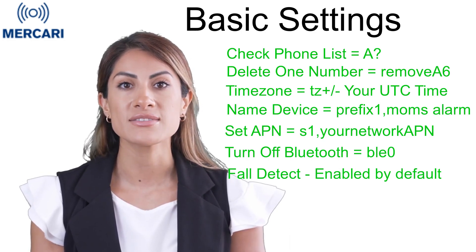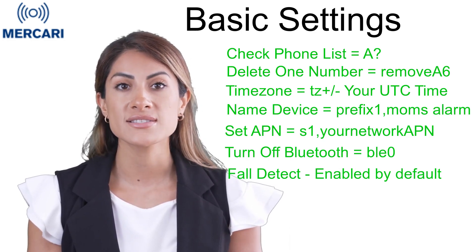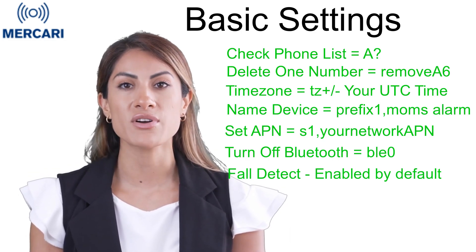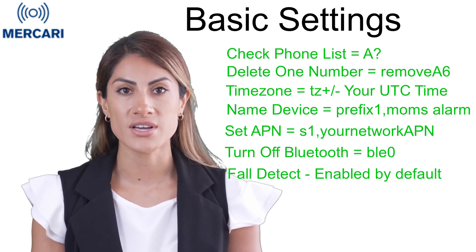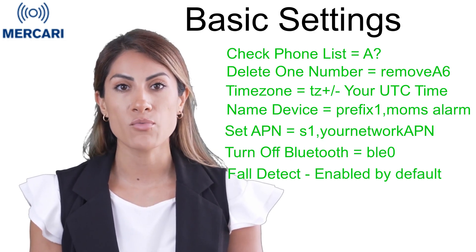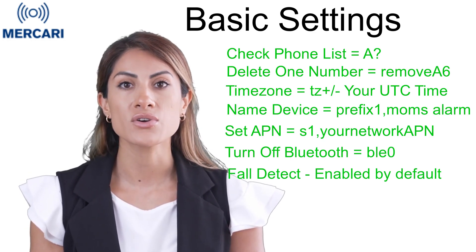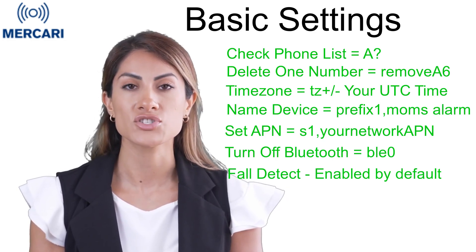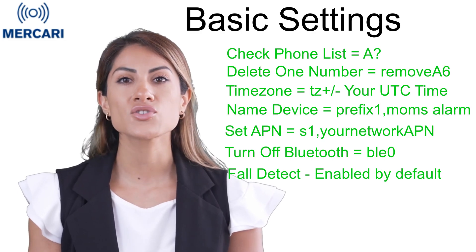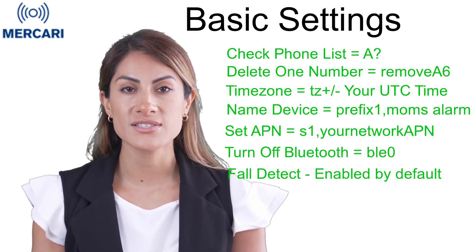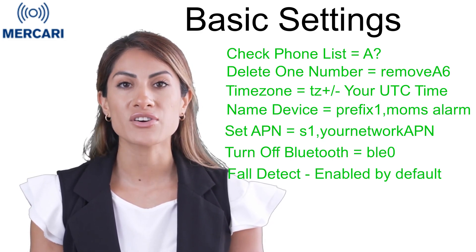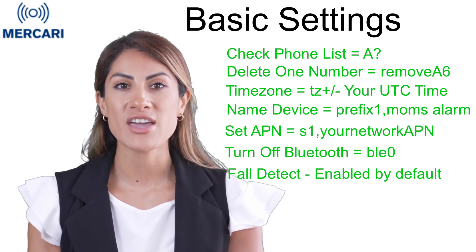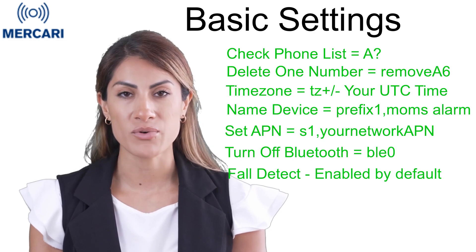For better connectivity and data communications, you'll need to set your network APN. The APN code is set by your SIM card network provider and may be written on the SIM card packaging. We have a list of common APN codes listed within our read-first manual. However, these can change without notice, so best to check with your SIM card provider for these details. Once you have your APN, you send the following code: S1, then the APN name provided by your network provider.